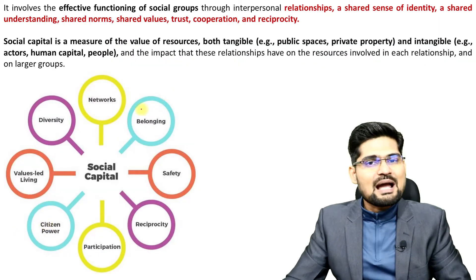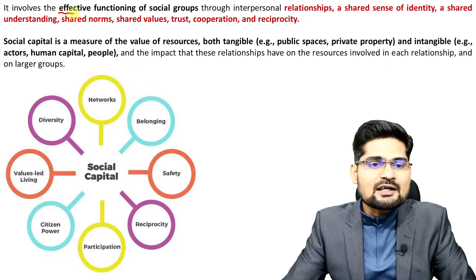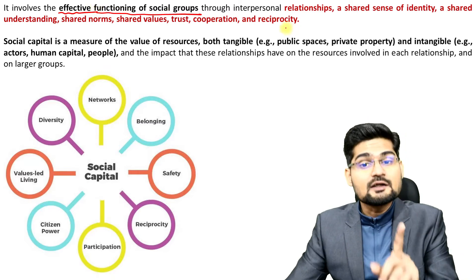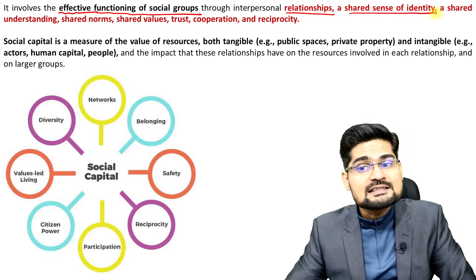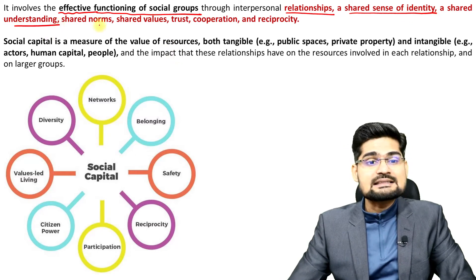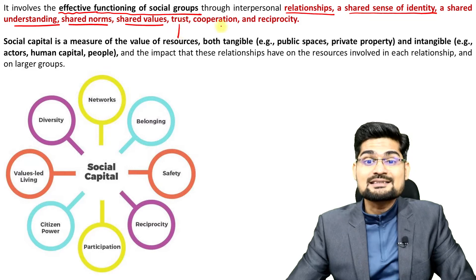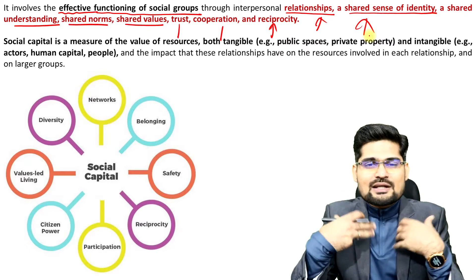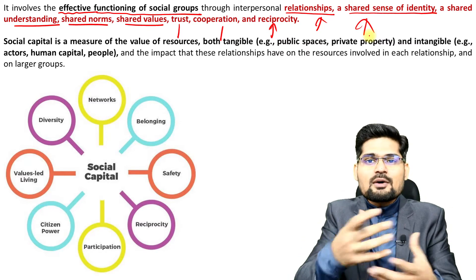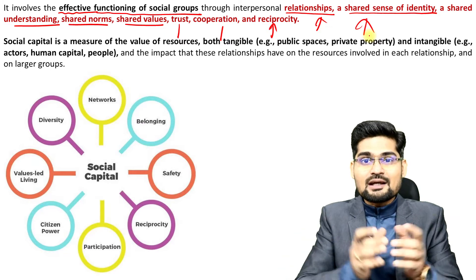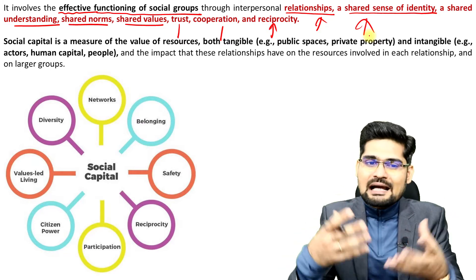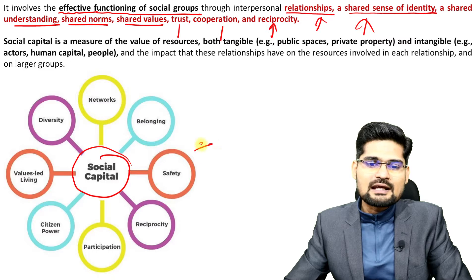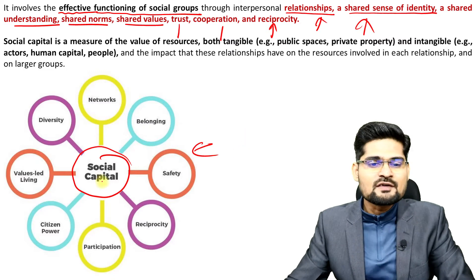What is social capital and its understanding? It has a basic understanding of being effective in terms of social functioning — effective functioning of social groups through interpersonal relationships, shared sense of responsibility and identity, shared understanding, shared norms, shared values, trust, cooperation, and reciprocity. These words point not to singularity or personal matters, but more about community — social cohesion and shared ideas, values, identities, norms and trust. In this flow diagram you can observe the various dimensions of social capital: networking, belongingness, safety, reciprocity, participation, power, values, value-led living and diversity.